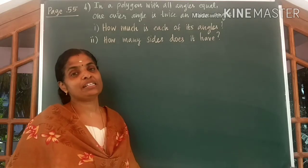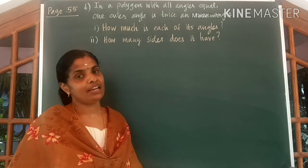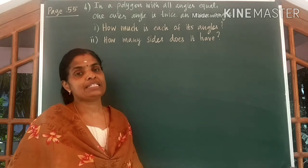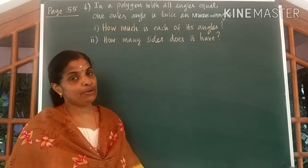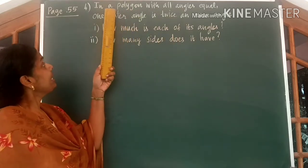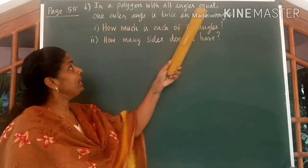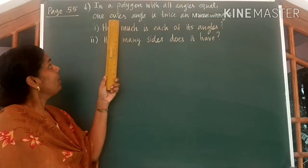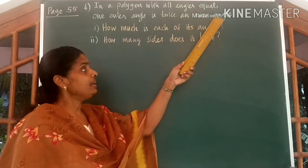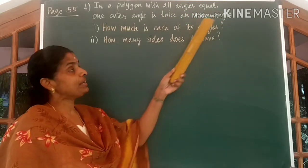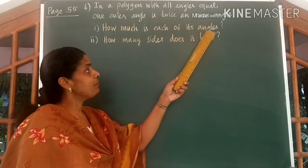Hi kids, welcome to the 5th part of polygons. We are discussing questions in page number 55. Look at the question: in a polygon with all angles equal, one outer angle is twice an inner angle. The first question is, how much is each of its angles?